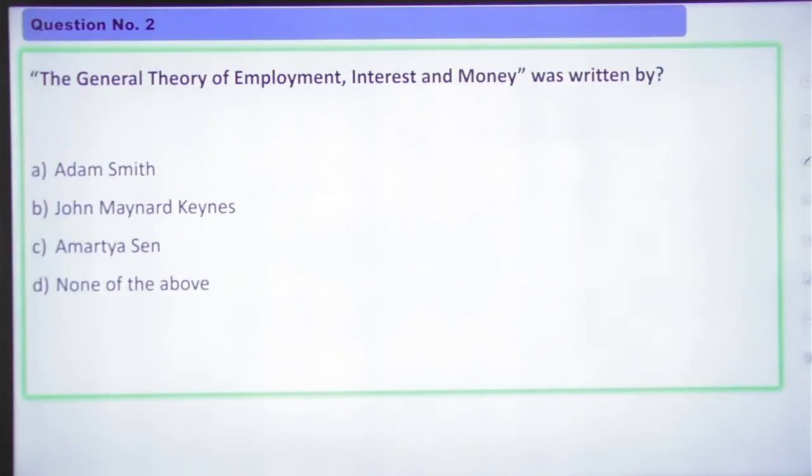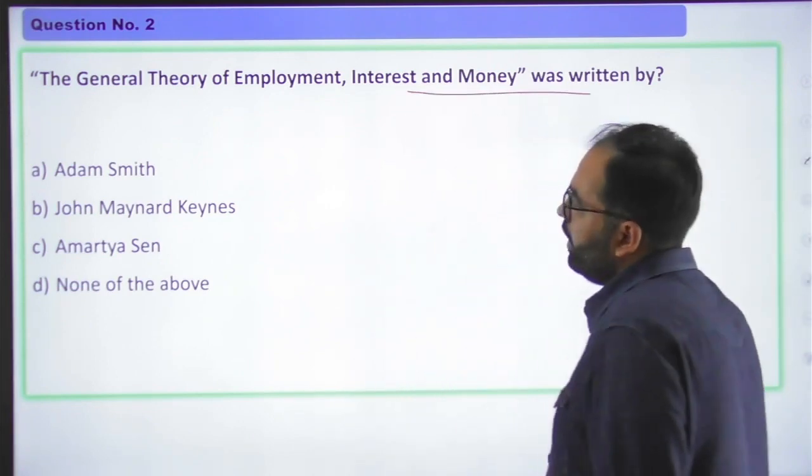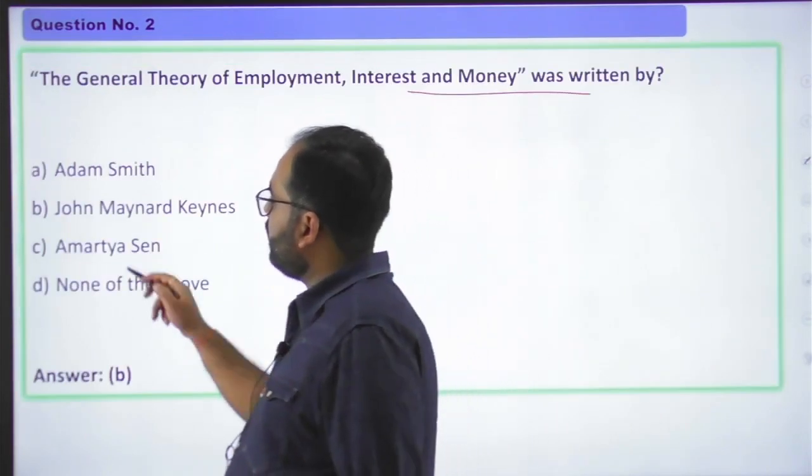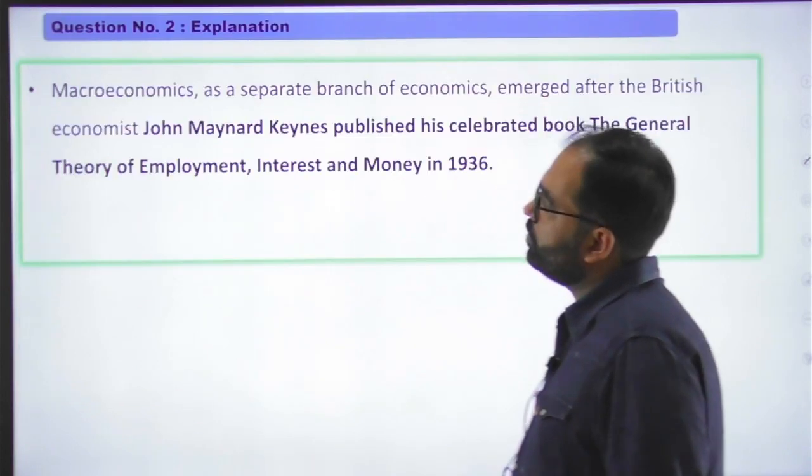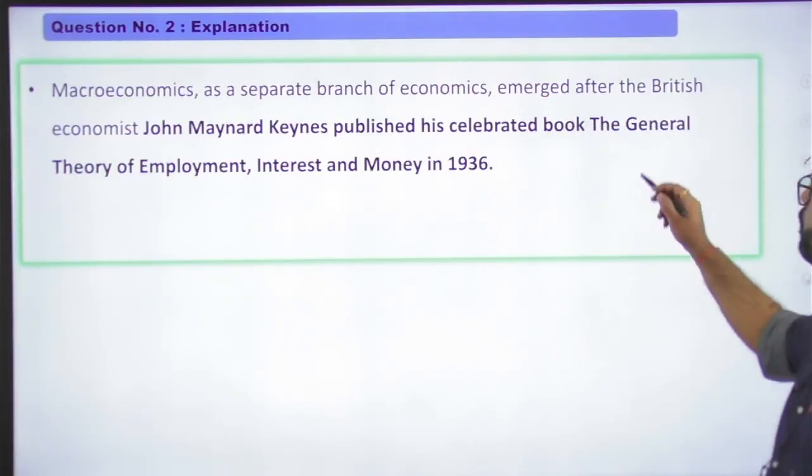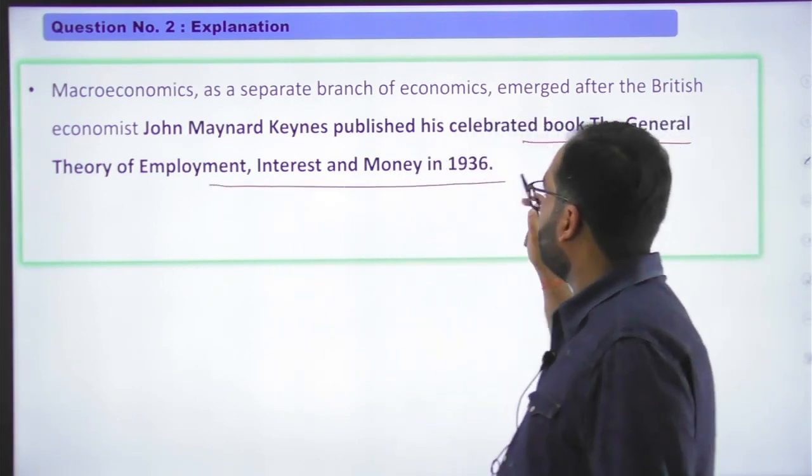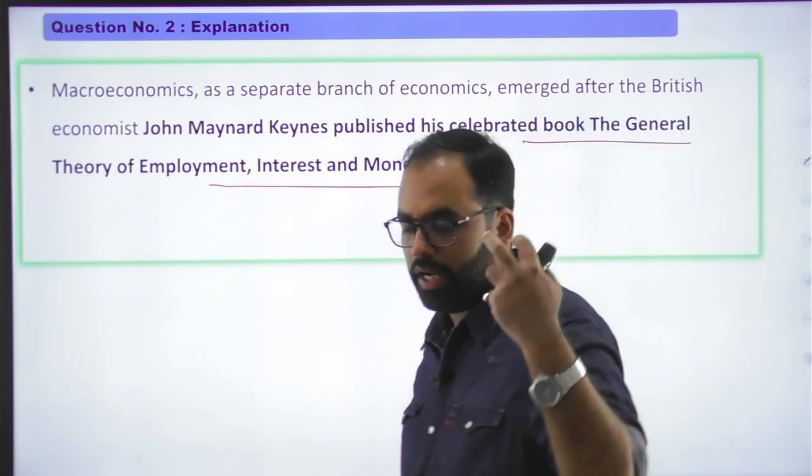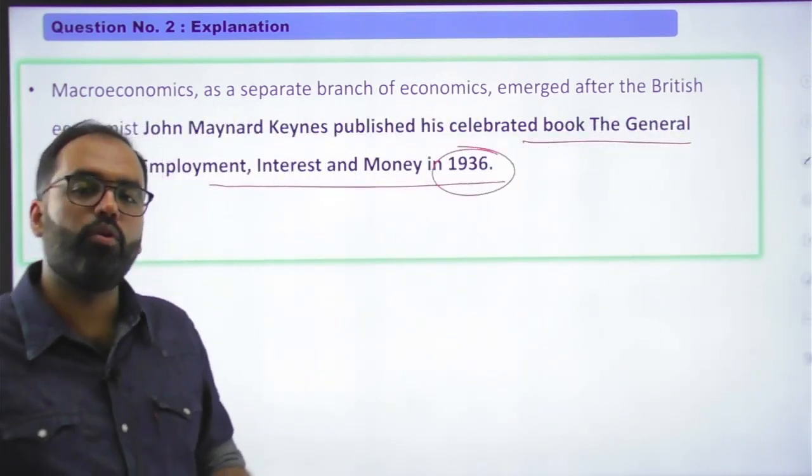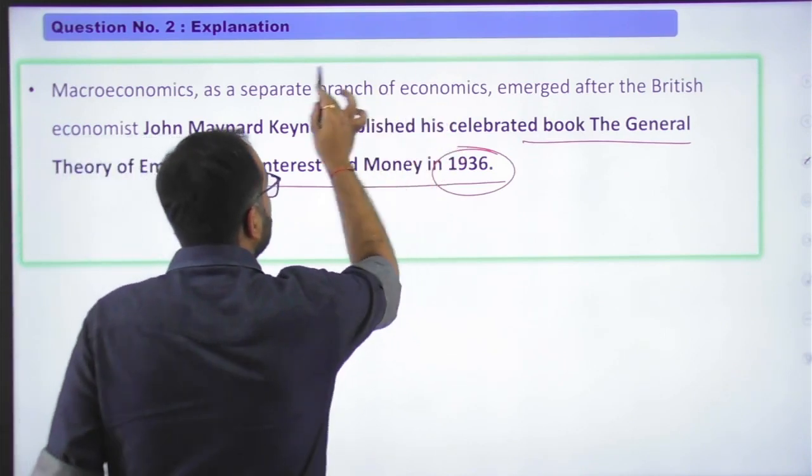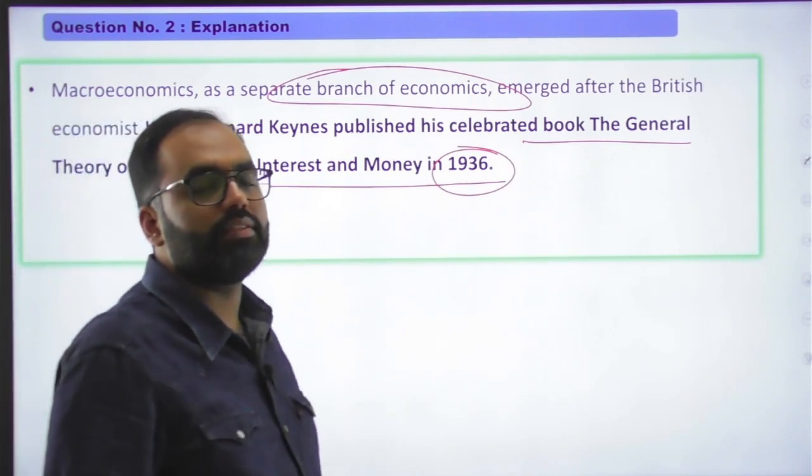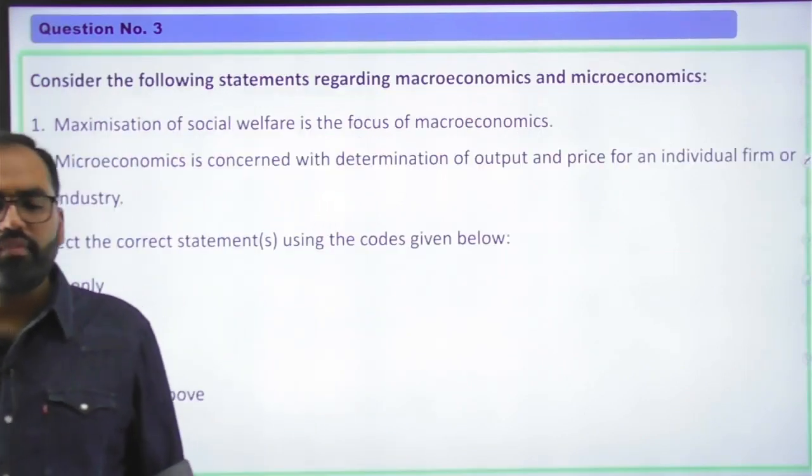Moving to question number two. The general theory of employment, interest and money was written by Adam Smith, John Maynard Keynes, Amartya Sen, or none of the above. Relatively straightforward question. Answer is simple here, B, that is John Maynard Keynes. Keynes's important noted book, The General Theory of Employment, Interest and Money, was published in 1936. Why this became a popular and celebrated book was after that it distinguished macro and microeconomics, and macroeconomics prominently came up as a separate branch within economics.